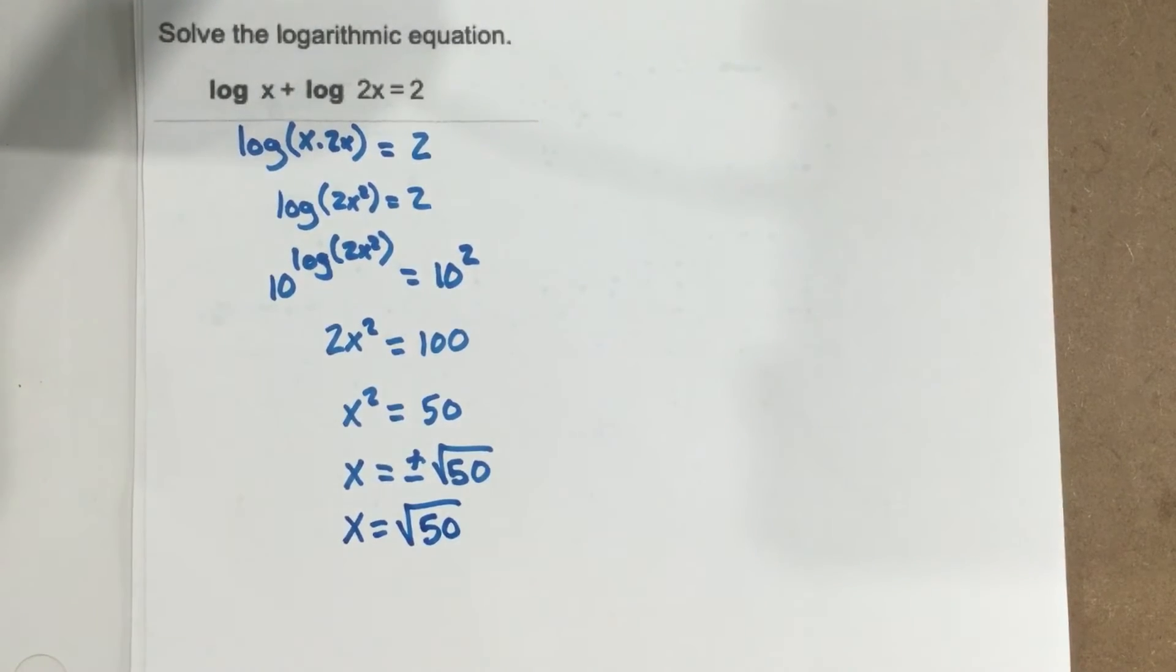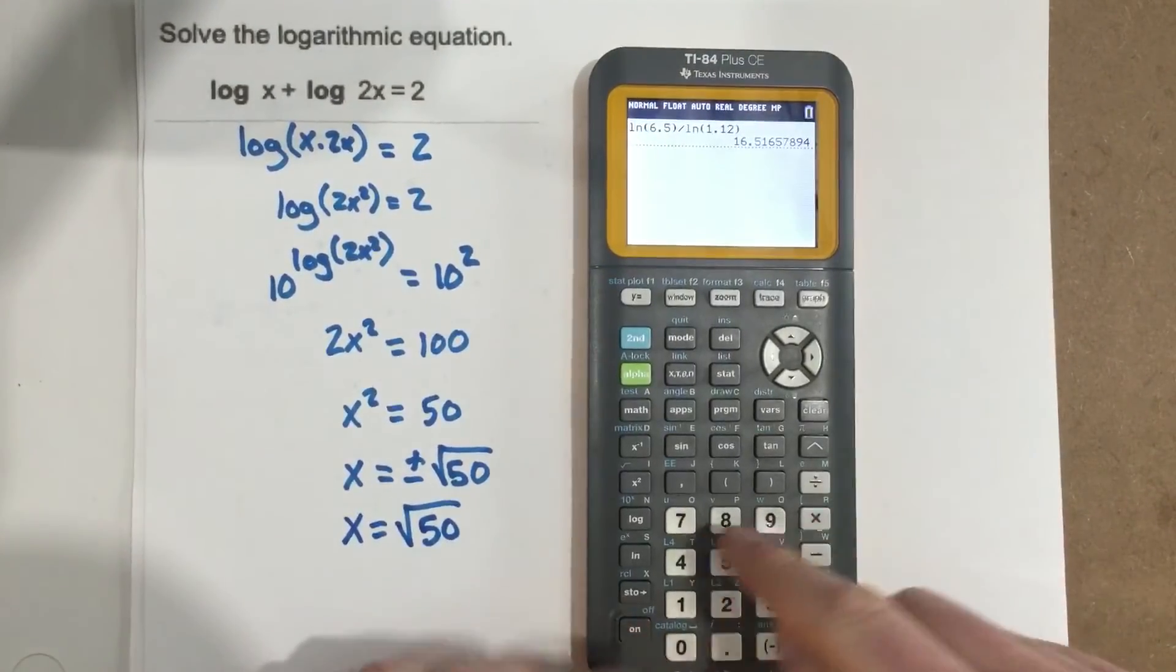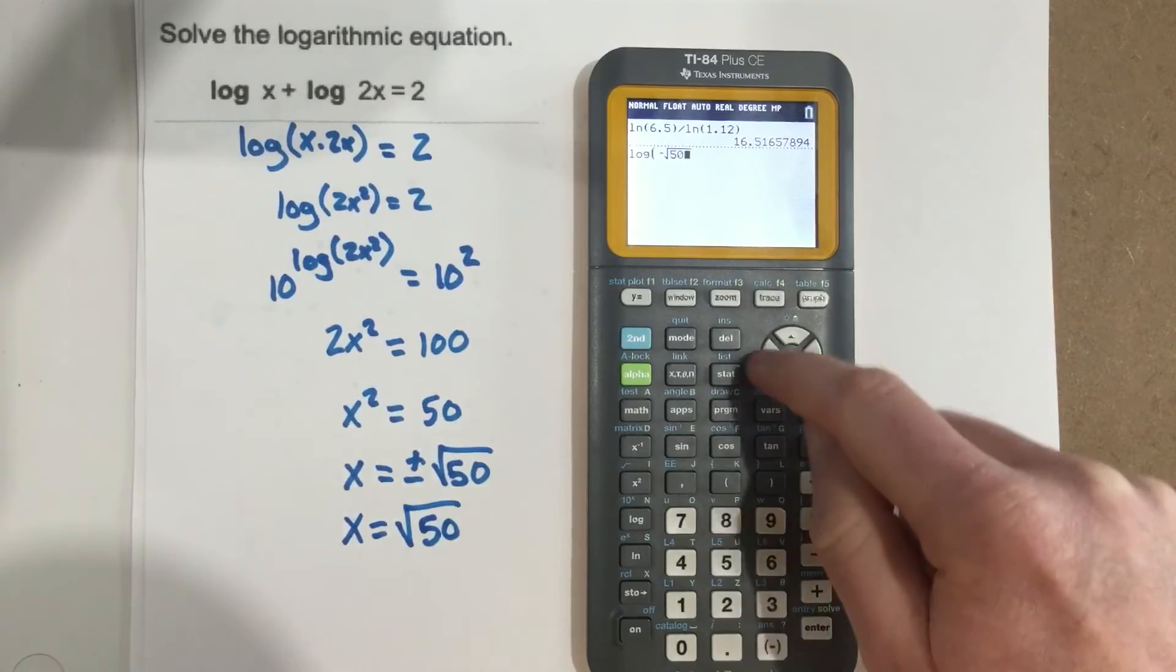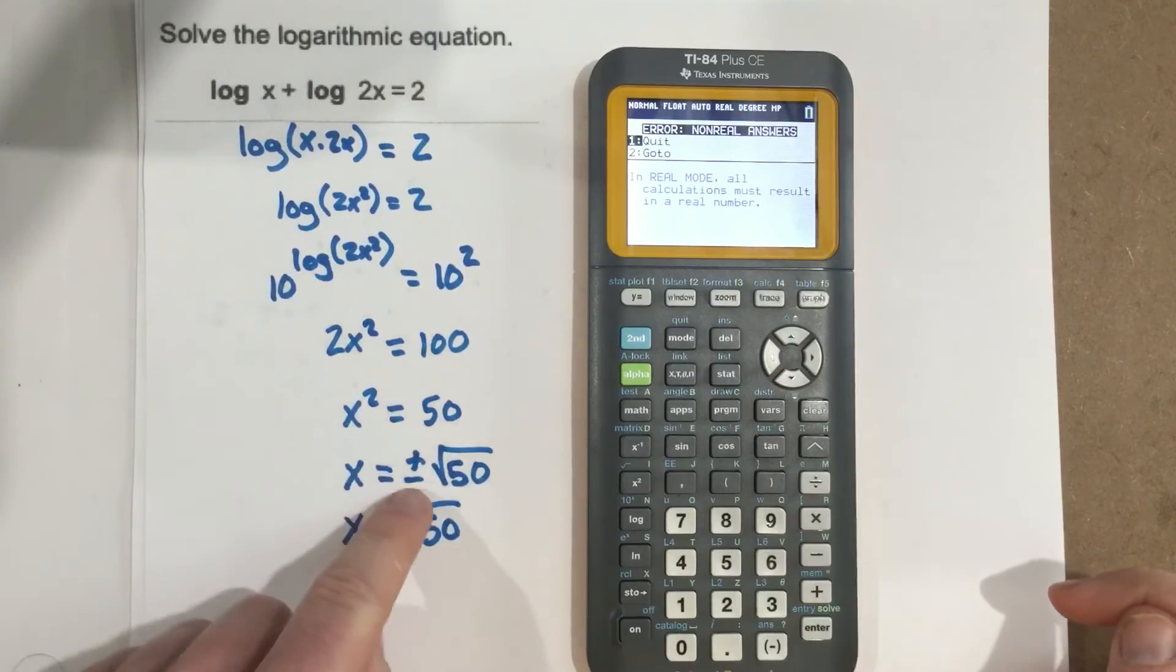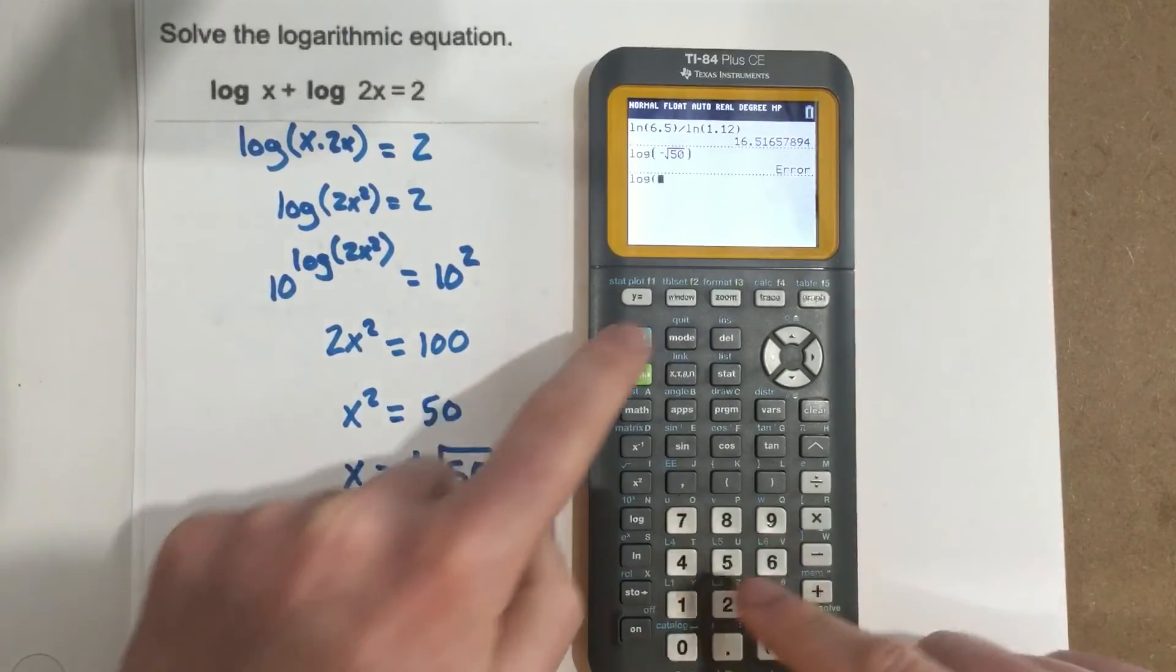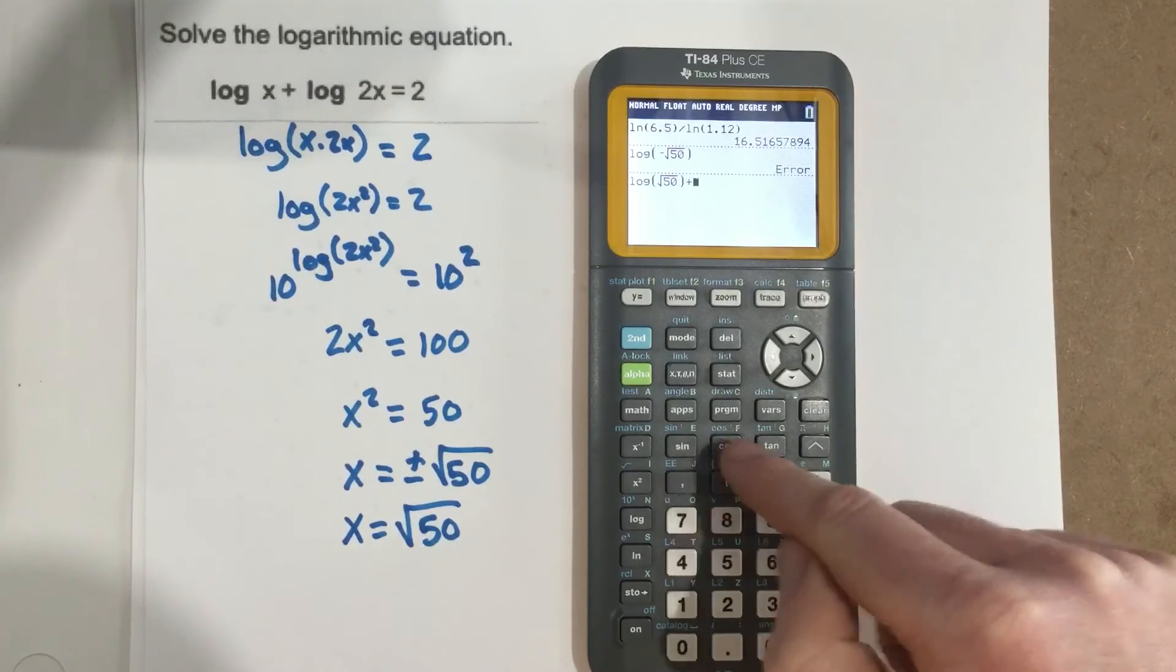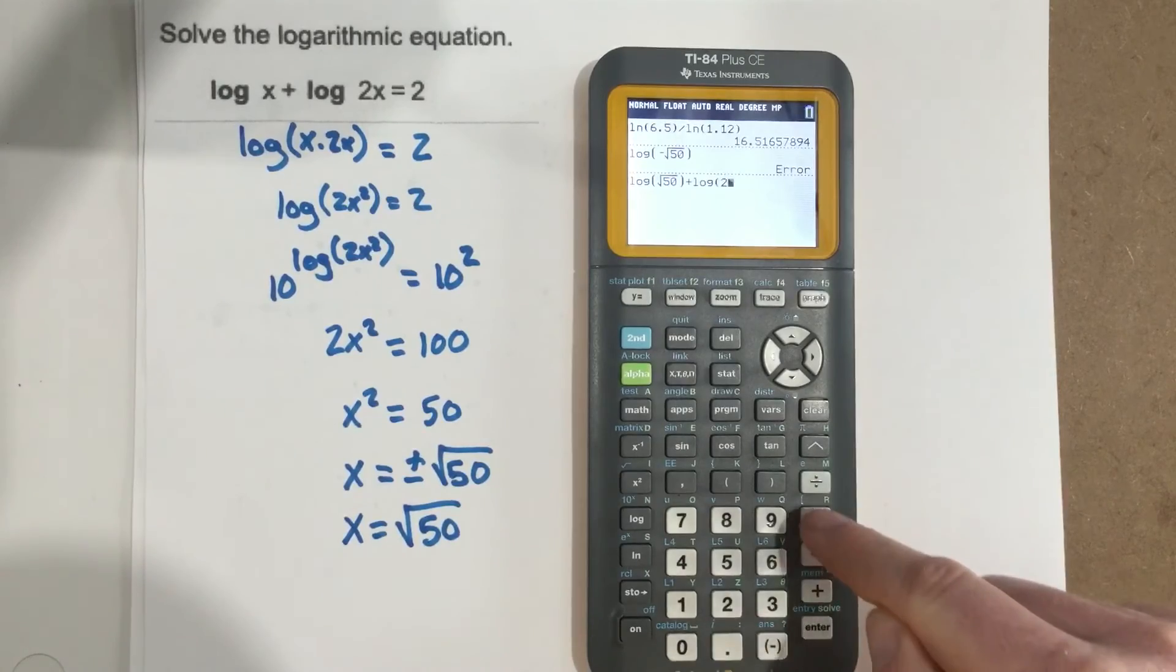Now, if we want to check the answer, we can. Let's just double check here. Let's do log of negative root 50. Error. So we know that the negative version didn't work.